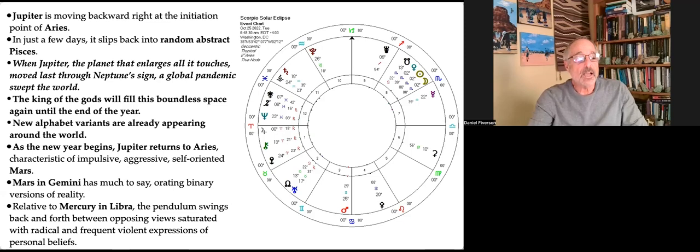The king of the gods will fill this boundless space again until the end of the year. As the new year begins, Jupiter returns to Aries, characteristic of impulsive, aggressive, self-oriented Mars.